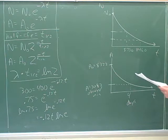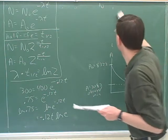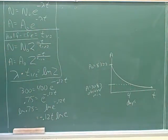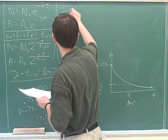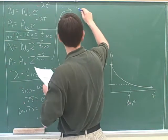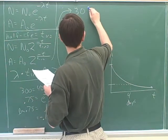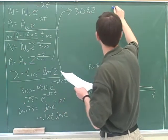Okay. Now that we have our graph, we can continue with the algebra. So the equation is 3082 equals 8322 e to the negative 4 over T one half. That sounds good. Do you have to convert the units? Yes. That's a good question.